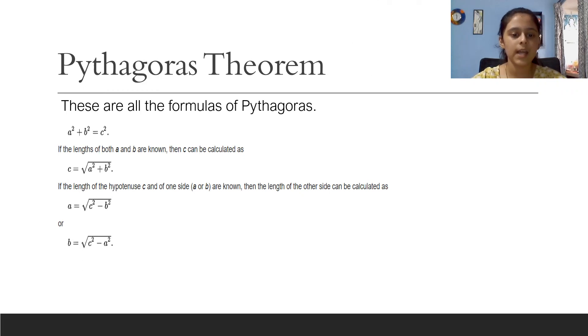If the length of c and one of the side a or b are known, then the length of the other side can be calculated as a equals the square root of c square minus b square or b equals the square root of c square minus a square.